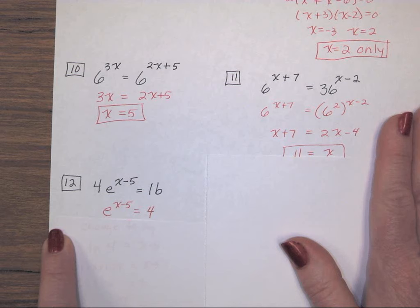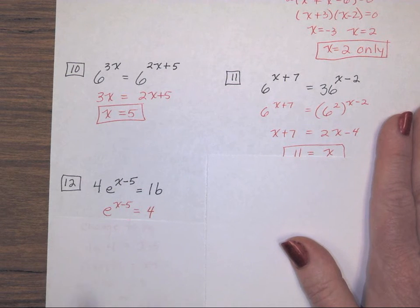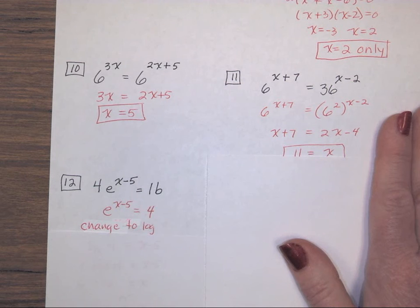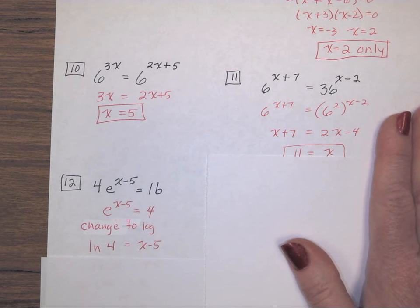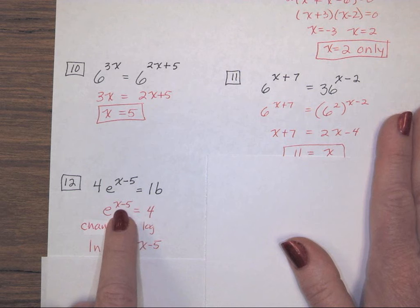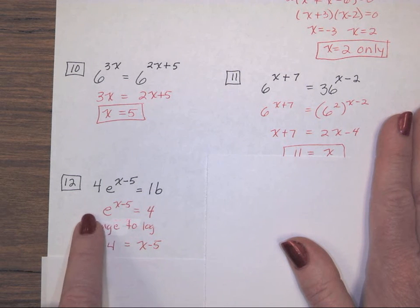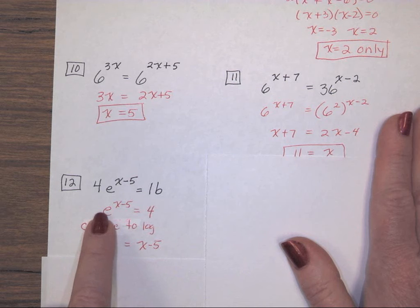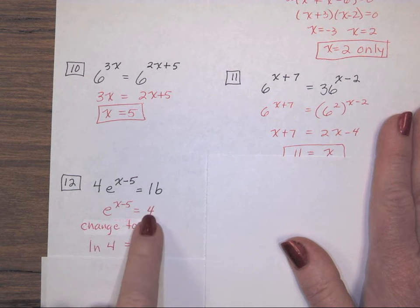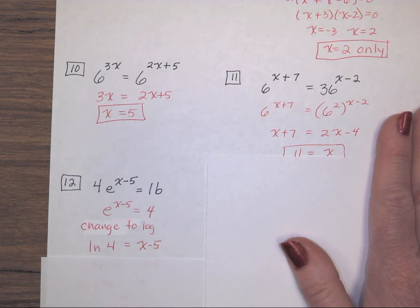So, if I want to change it to a natural log, or I could just take the natural log of either side. This time, I wrote that I was going to change it to logs. So, it is the natural log of the number 4 equals the exponent, x minus 5. Again, I would get the same thing if I took the natural log on both sides. It cancels the e, leaving an x minus 5. And on the other side, I have a natural log of 4.